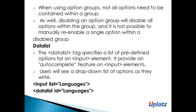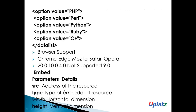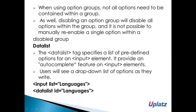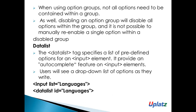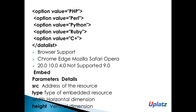Next is data list. The data list specifies a list of predefined options for the input element and provides an autocomplete feature on the input element. You will see a dropdown list of options as you type. For example: input list languages, data list id languages, option values. These browsers support the data list. This is an advanced selector introduced in HTML5.